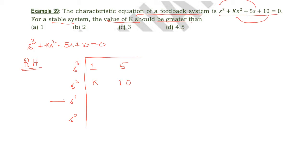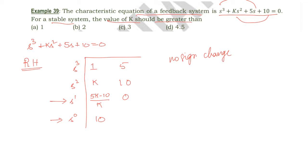The elements of the s¹ row will be (5k − 10) divided by k, followed by 0. The s⁰ row element is 10. So the first column elements are: 1, k, (5k − 10)/k, and 10.